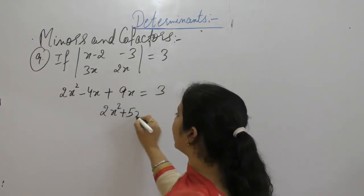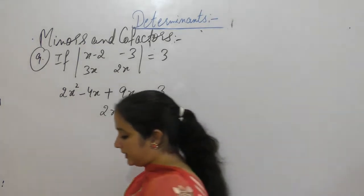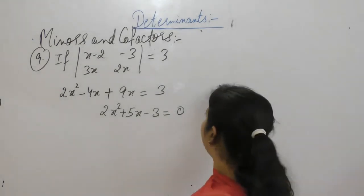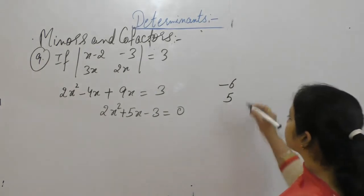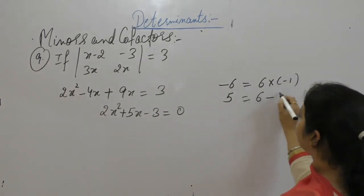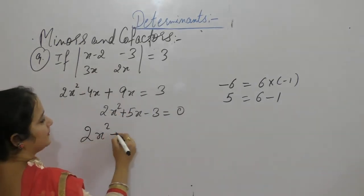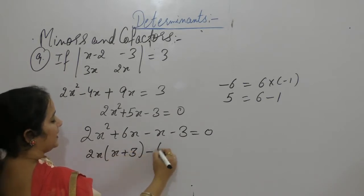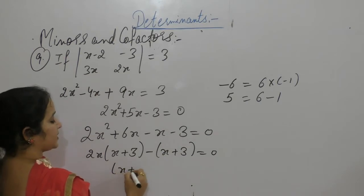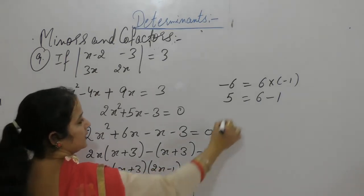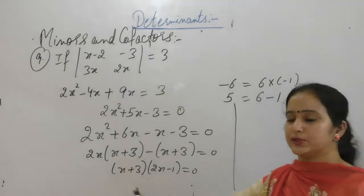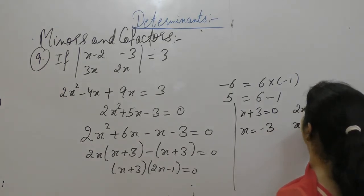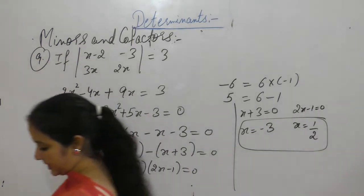So 2x squared, 9 minus 4 gives 5x, minus 3 equals 0. On multiplication we want the term minus 6, and on addition we want the term 5. So minus 6 and 5: 6 into minus 1 and 6 minus 1 is plus 5. Factorize: 2x squared plus 6x minus x minus 3. Take 2x common: 2x(x plus 3) minus 1(x plus 3). So x plus 3 is 0, giving x equals minus 3, or 2x minus 1 equals 0, giving x equals 1/2.